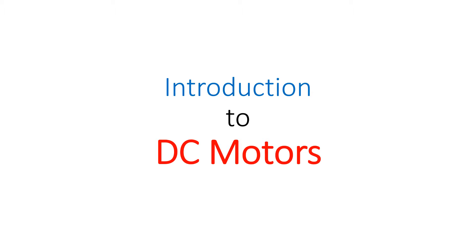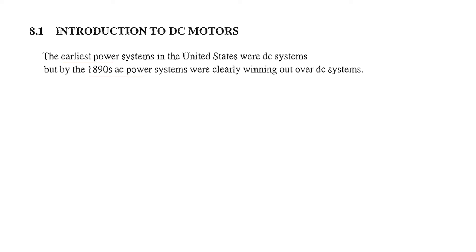Bismillah ar-Rahman ar-Rahim. This video is an introduction to DC motors. The earliest power systems in the United States were DC, but in 1890 AC power systems were introduced and started winning over the DC system because of its ease of transportation. Despite this fact, DC motors continue to be in use even today.